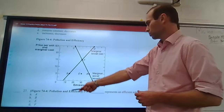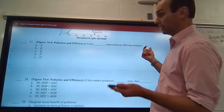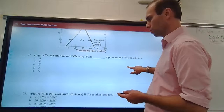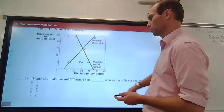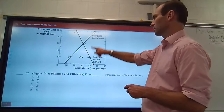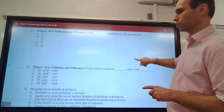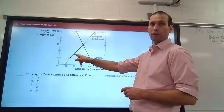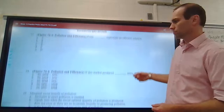Looking at a graph with price per unit, marginal social benefit, and marginal social cost, with emissions on the x-axis. If this market produced 40 units, marginal social benefit would equal marginal social cost — no, that's at 30 units. At 30 units, marginal social benefit equals marginal social cost — yes. At 40 units, marginal social benefit would be less than marginal social cost — yes, correct. At 20 units, you need to read the graph carefully to determine whether MSC is greater or less than MSB at that quantity.